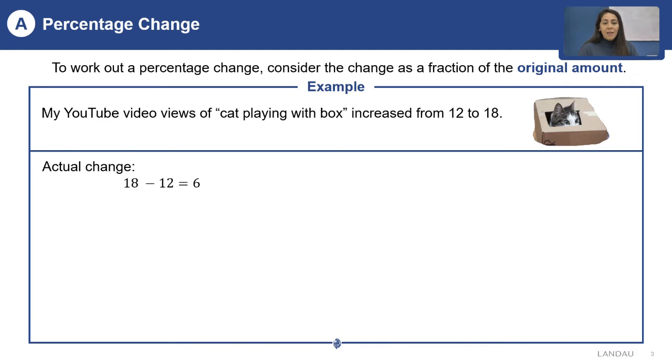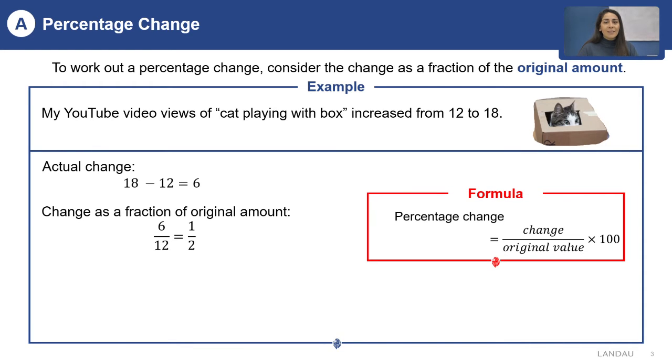Then, let us divide this actual change by the original amount. 6 divided by 12 is 1 over 2. Finally, let us convert the fraction to the percentage.